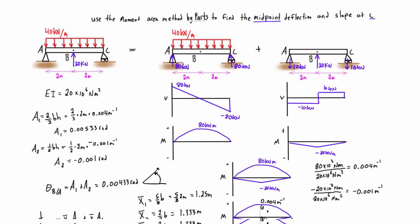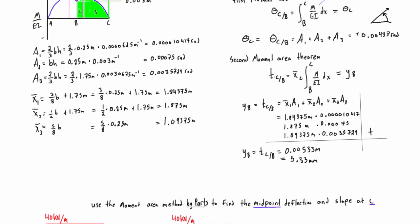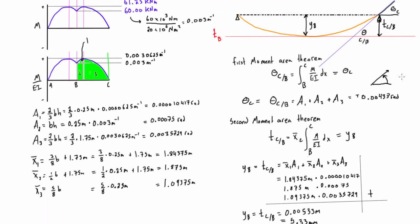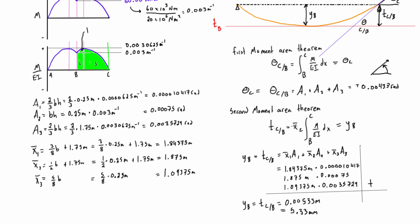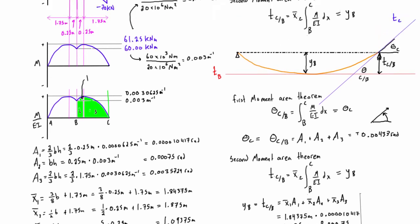If we go up and compare that to what we got in the problem we did with just the regular moment area method, we get the same things. So we had 0.00433 radians and 5.33 millimeters.